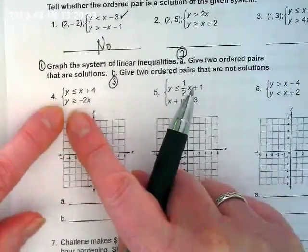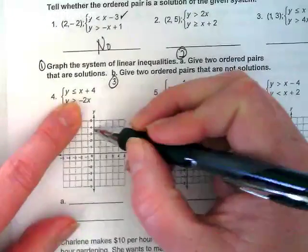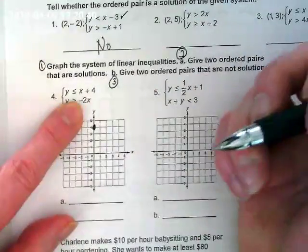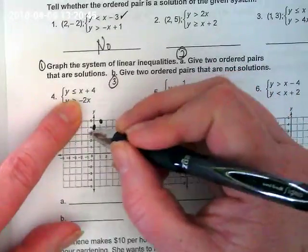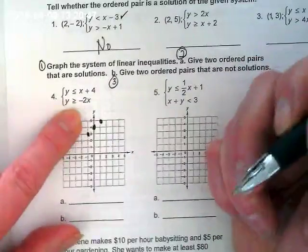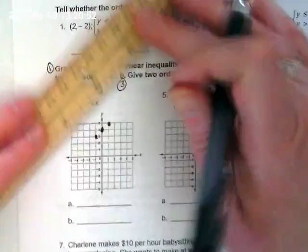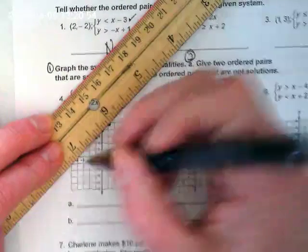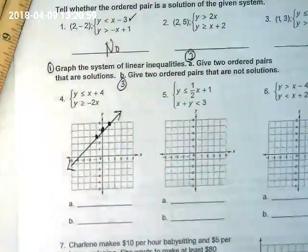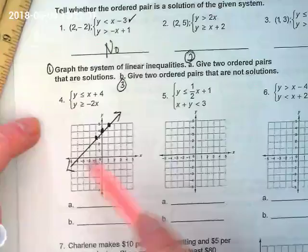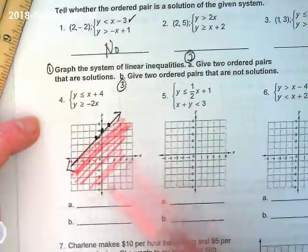Are these both already solved for y? Yes. Okay, so we can just graph. The first one is starting at four. And it's one over one. Solid or dashed line? Solid. This y is less than or equal, so many of our things were going under. Okay, so I'm shading under.